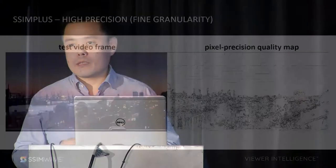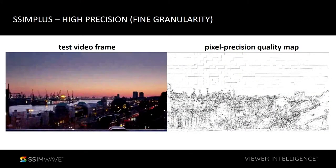Simplus also provides what I call high precision or fine granularity — the capability of giving very detailed quality assessment up to the pixel level. For example, from a video frame, you can see blocking artifacts in the sky and blurriness in the fine textures of buildings. On the right-hand side, you see the Simplus quality map, which tells you at each pixel precisely how good the quality is. You can see a lot of blockiness detected in the sky and blurriness at the bottom — darker means worse quality. That gives you pixel-level precision of picture quality.